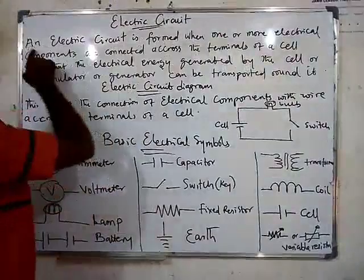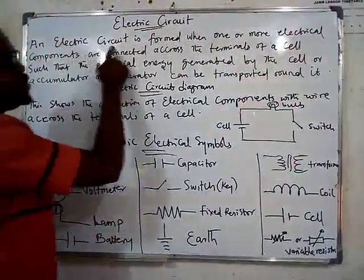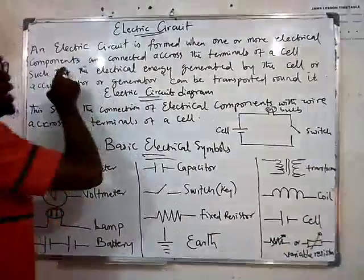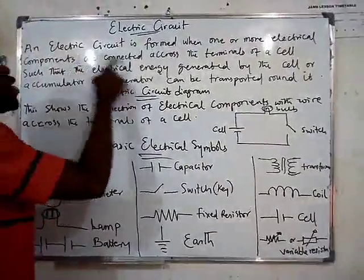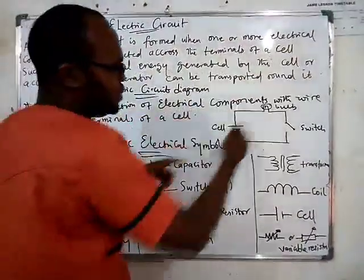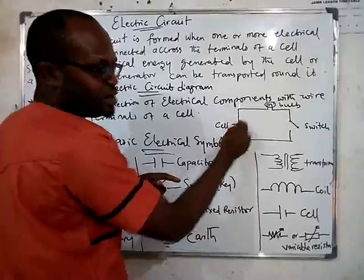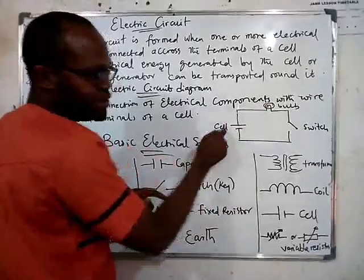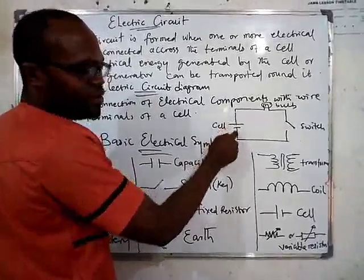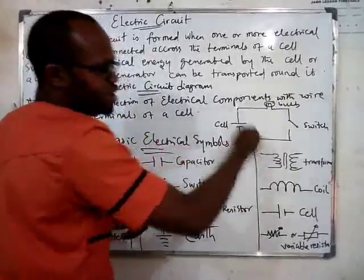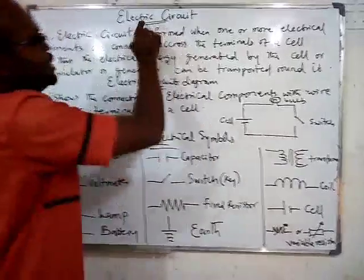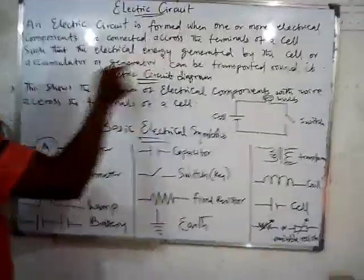An electric circuit is formed when one or more electrical components are connected across the terminals of a cell. The cell has two terminals — positive and negative. You connect all these electrical components using a wire, and you call it an electric circuit.